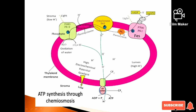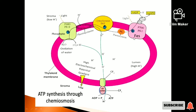Plastocyanin transfers electrons to Photosystem I (P700). When light is absorbed by P700, P700 is excited and its electrons are passed to the primary electron acceptor of PS1.